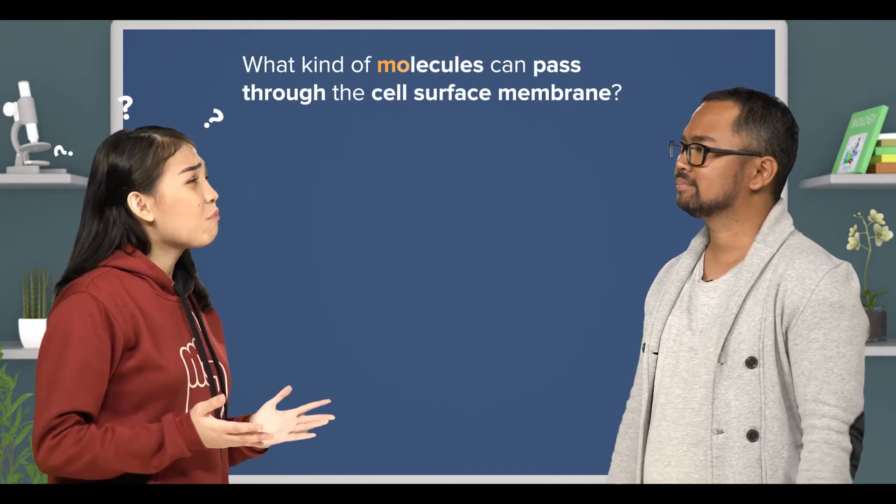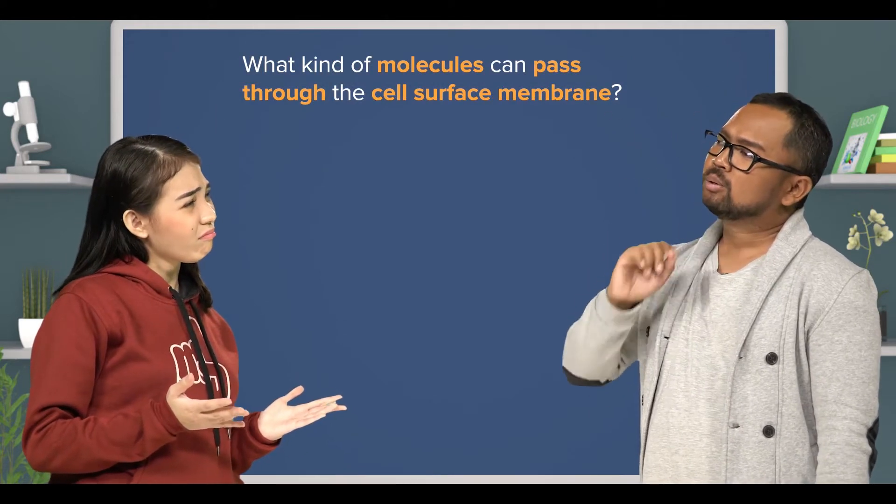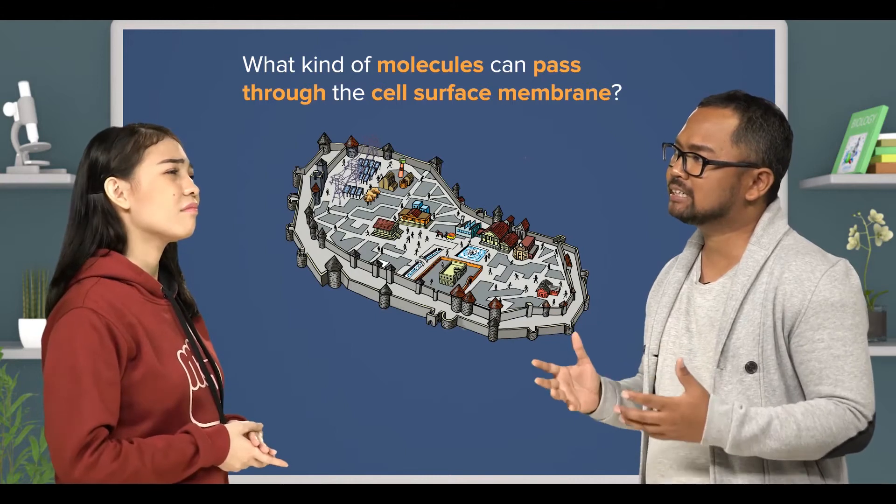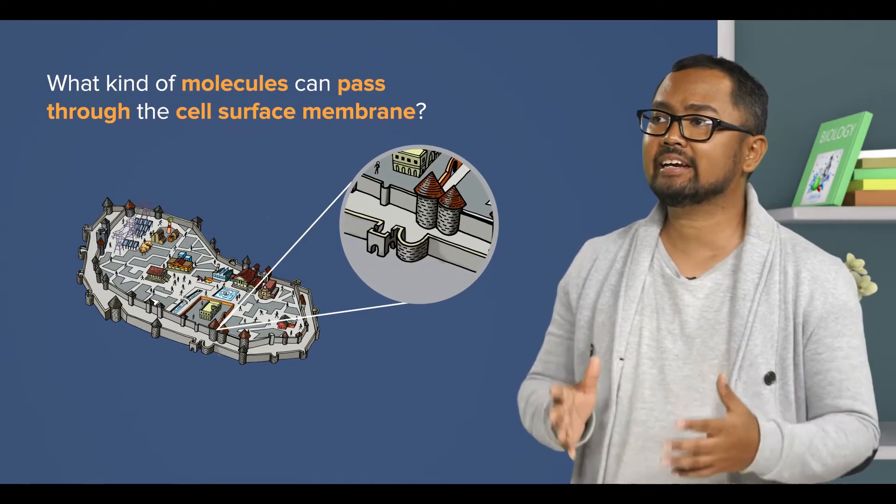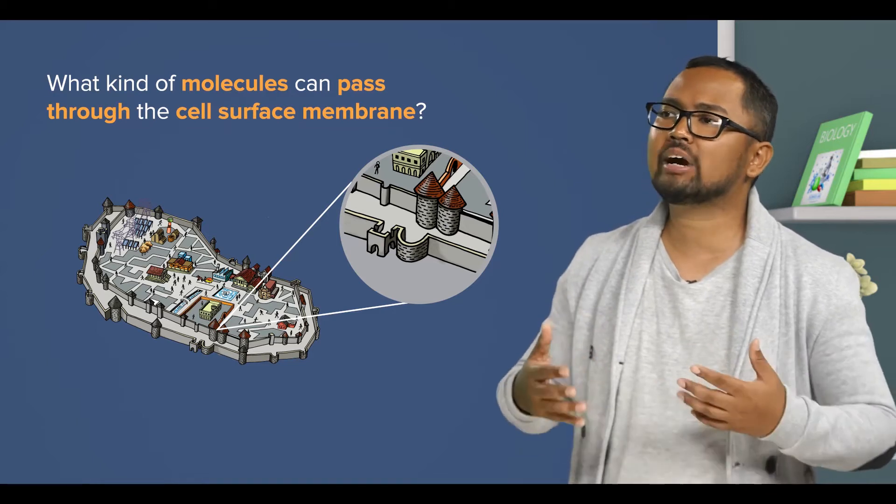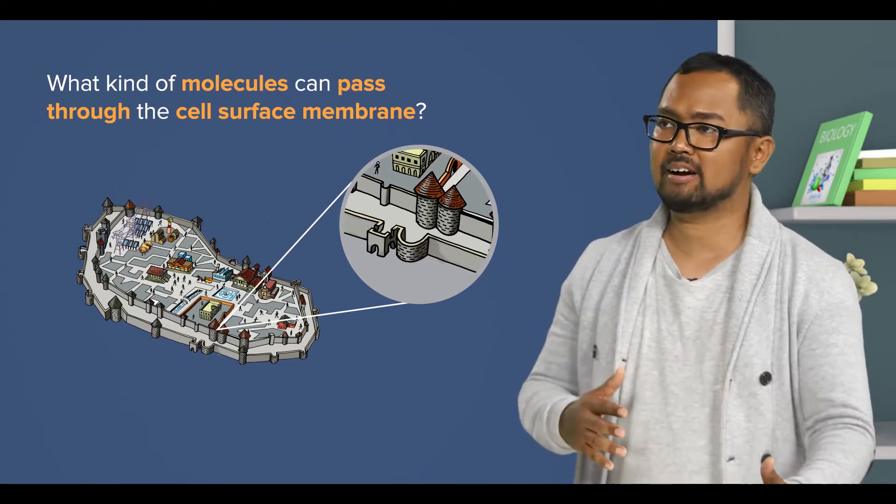So, what kind of molecules can pass through the cell membrane? Well, imagine a fortress and invaders. The invaders that have smaller and thinner bodies are usually more agile and can dodge attacks from the guards.